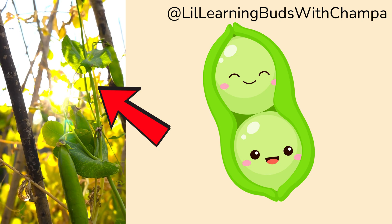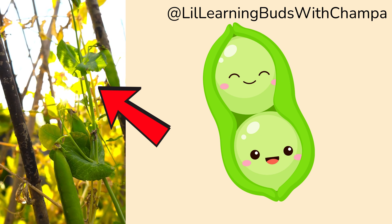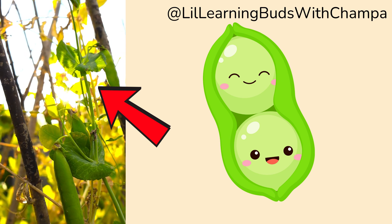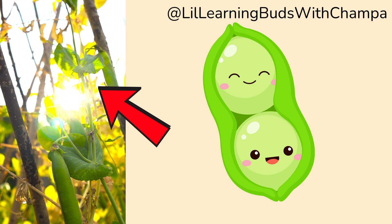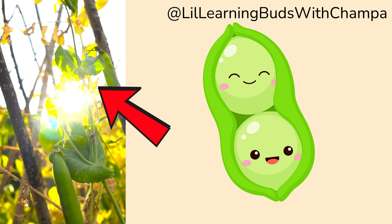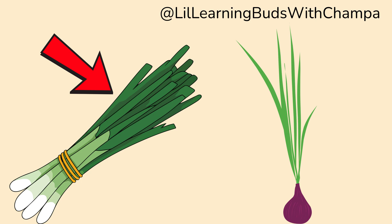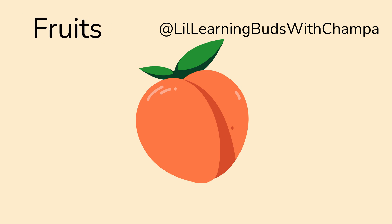Leaves also change shape to do some cool things. In a pea plant, these leaves help the plant climb. In the cactus plant, they turn into spikes to protect the plant, and in onion plants they get thick and juicy to store food.